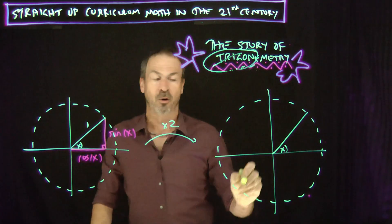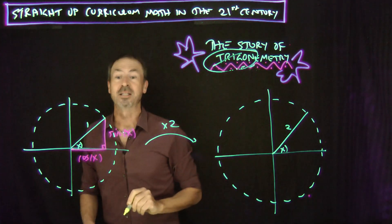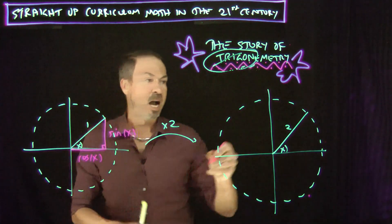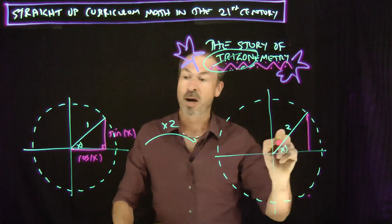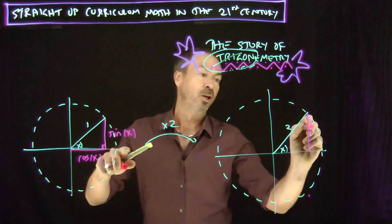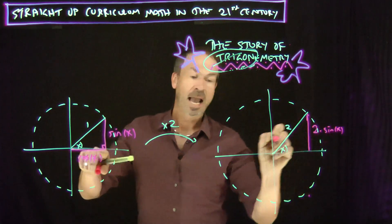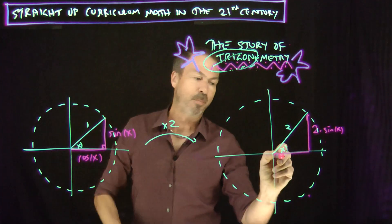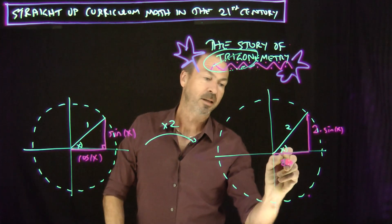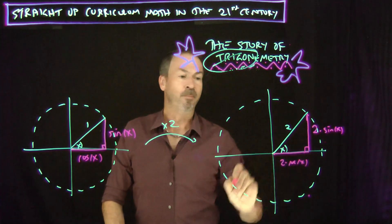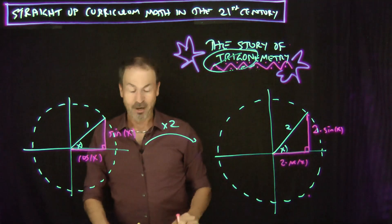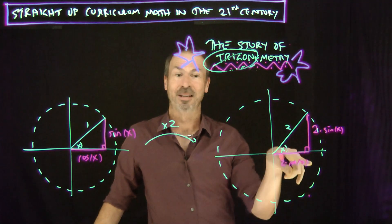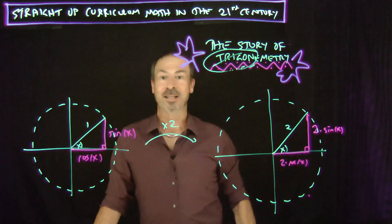Still the same angle, but now radius 2 instead of radius 1. I called this sine of x before, but this length will now be twice as long — it'll be 2·sine of x. And this overness was cosine of x before, and now it'll be doubled: 2·cosine of x. And now I can just work with 2·sine of x and 2·cosine of x to work out the height and overness of a circle of radius 2.